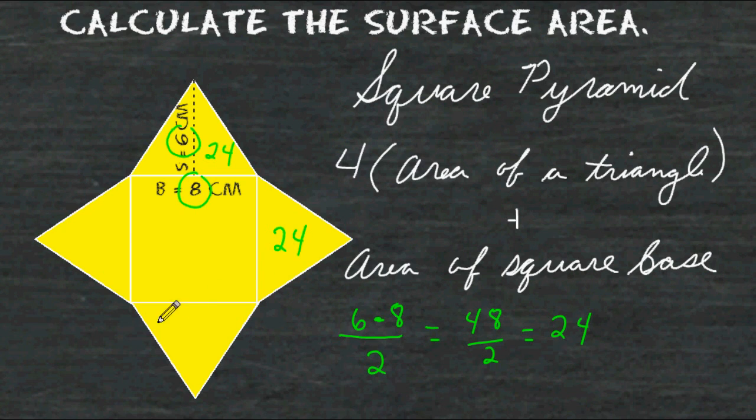Because the triangles are congruent to each other, we may take the area of one triangle and multiply that by 4. So 4 triangles with an area of 24 square centimeters is equal to 96 square centimeters.